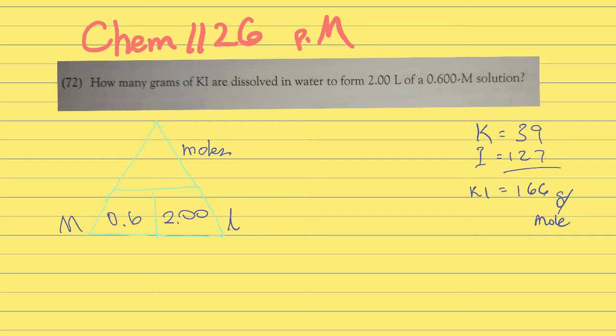Let's see what's given. First, here's the magic triangle. The question asks how many moles, so that's what we don't know - that's on top and why it's blank. It says we're forming 2 liters of solution, so 2 liters goes in the bottom right-hand corner.